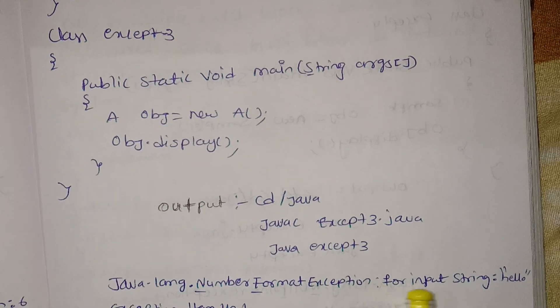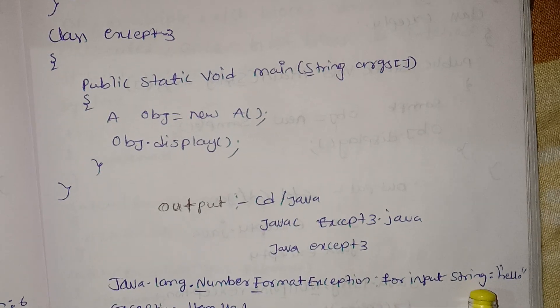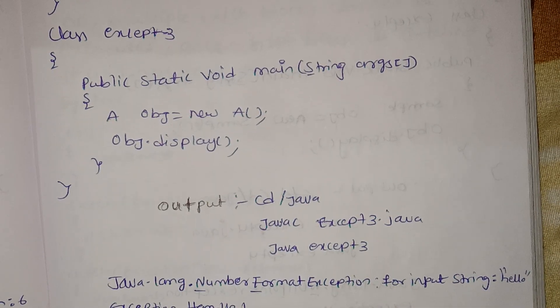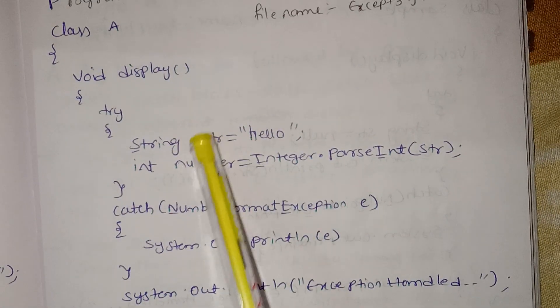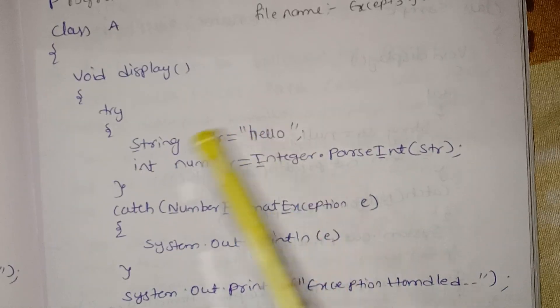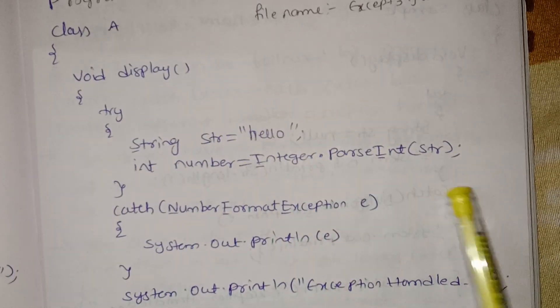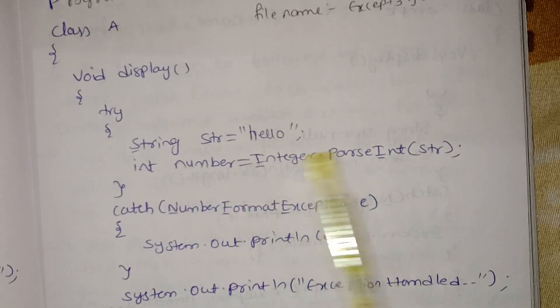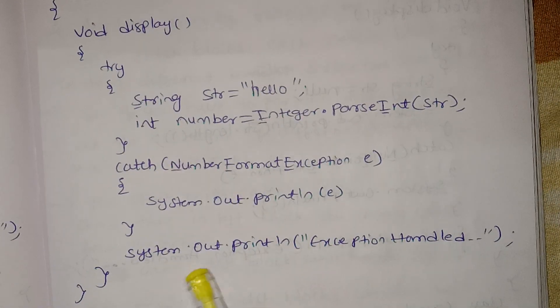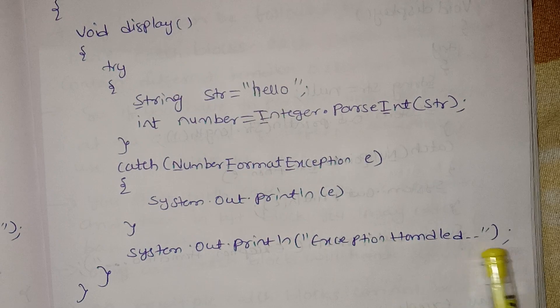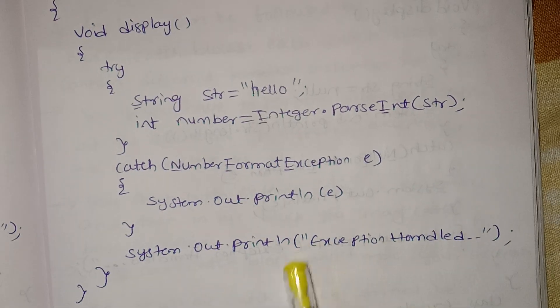For the input string, here is the NumberFormatException for input string — the variable str. Here is the print statement, the integer data, and the exception in the catch block. Here is the catch block byte and the handler.